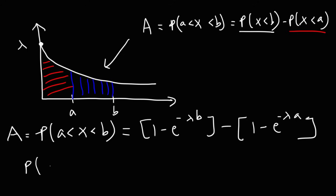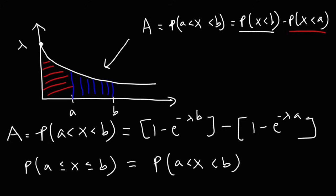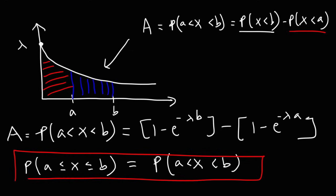Another thing to keep in mind: for a continuous probability distribution, the probability that x is greater than or equal to a and less than or equal to b is the same as the probability that x is strictly between a and b — there's no difference. Also, the probability that x equals a single value, such as P(X = a), is 0. The only way to get a probability greater than 0 is to use a range of x values, because at x equals a you only have a line — there's no width, so you can't calculate the area.